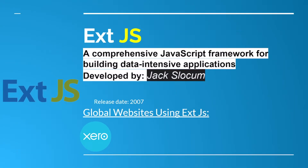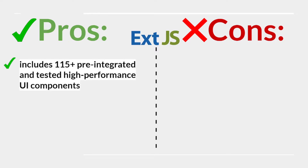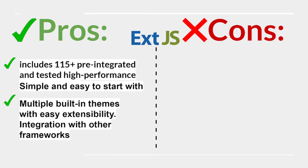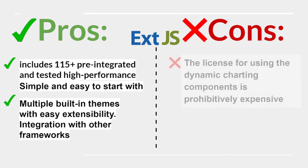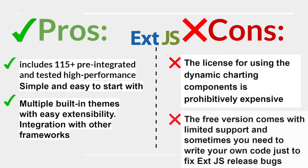ExtJS is a comprehensive JavaScript framework for building data-intensive applications, developed by Jack Slocum, released in 2007. Pros: includes over 100 pre-integrated and tested high-performance UI components, simple and easy to start with, multiple built-in themes with easy extensibility, and integration with other frameworks. Cons: the license for using the dynamic charting components is expensive, and the free version comes with limited support.